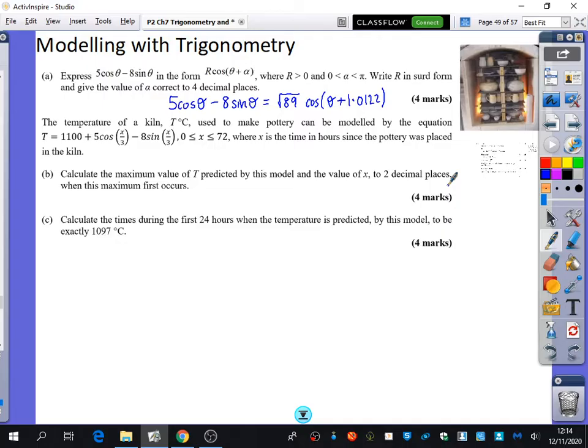We're going to try and calculate the maximum value of the temperature predicted by this model and the value of x to two decimal places when this maximum first occurs. The temperature is 1100 plus this harmonic identity, which I know I can replace with √89 cos - but I'm going to have to write something different. What am I going to be writing differently? Instead of theta, I'm going to be writing x/3 or a third x. So cos(x/3 + 1.0122). Everything else has stayed the same there.